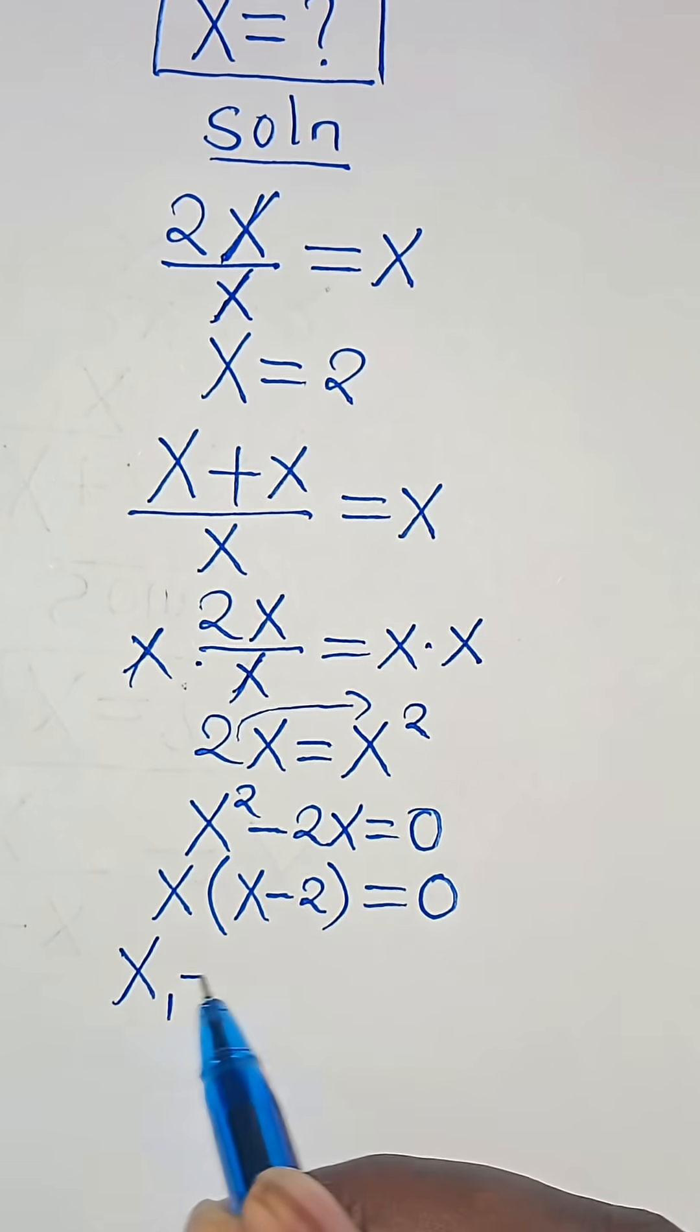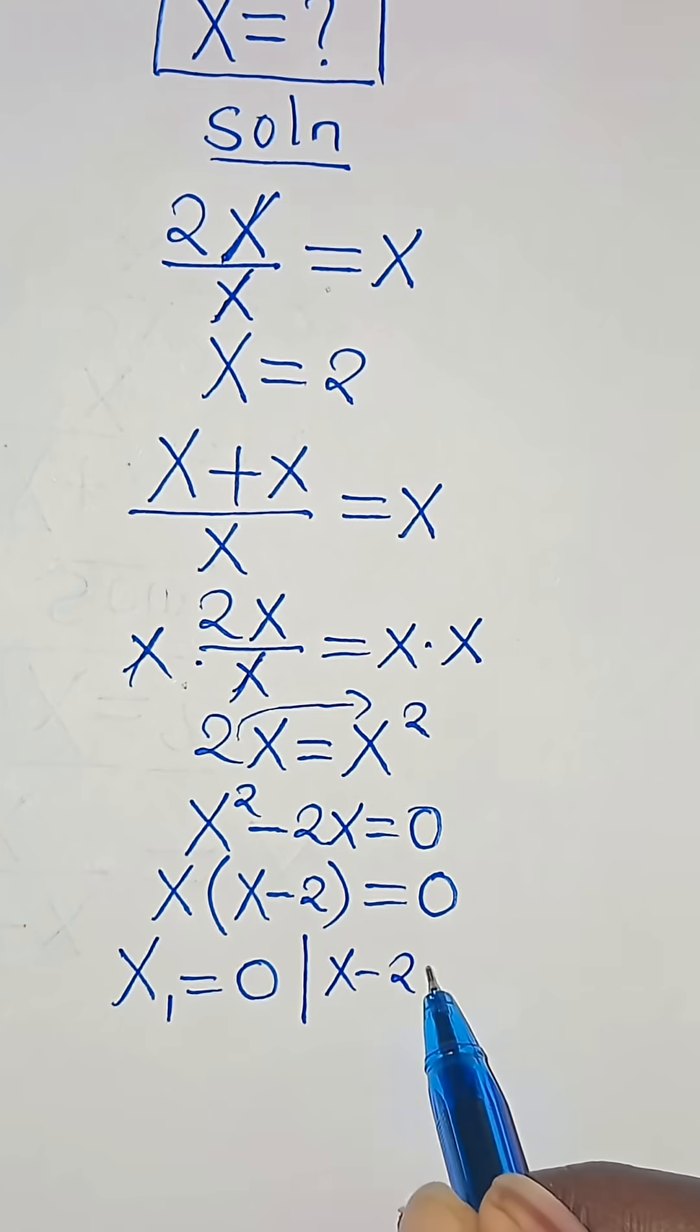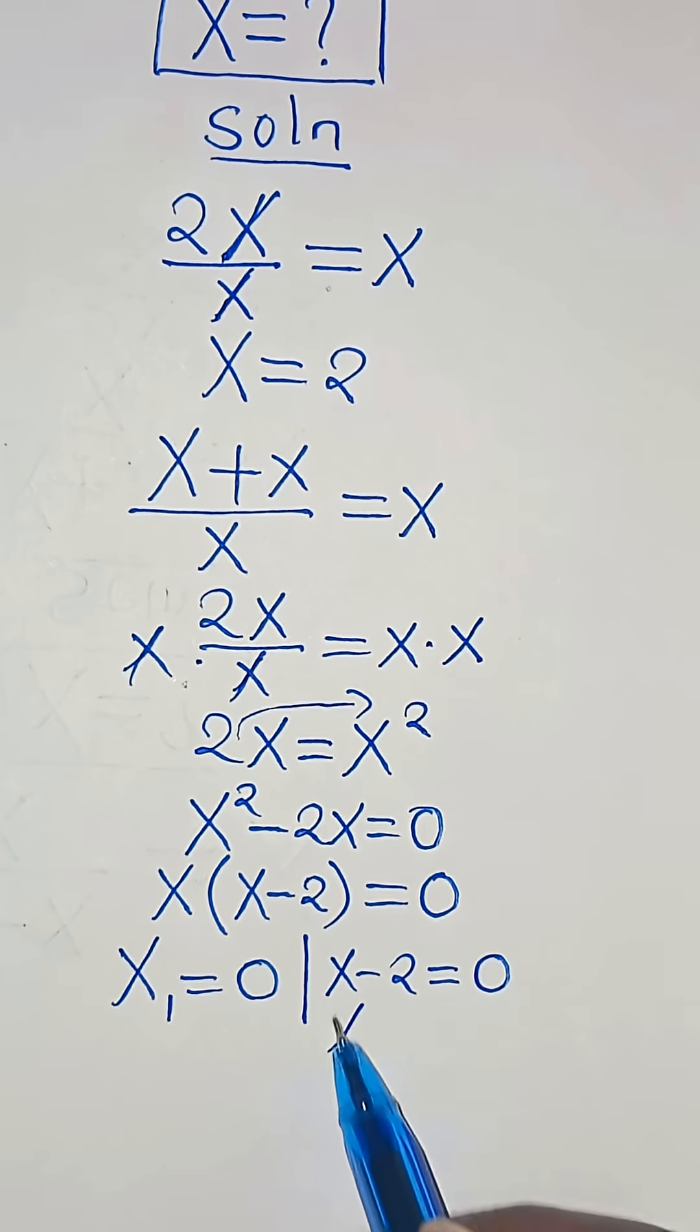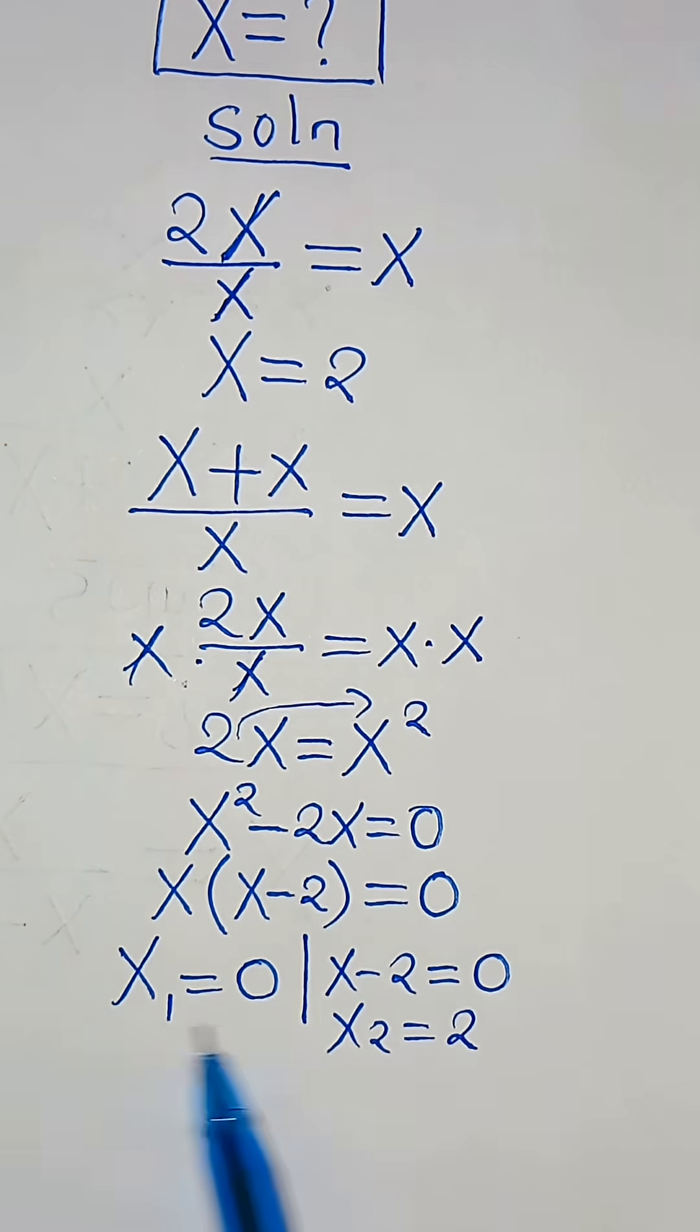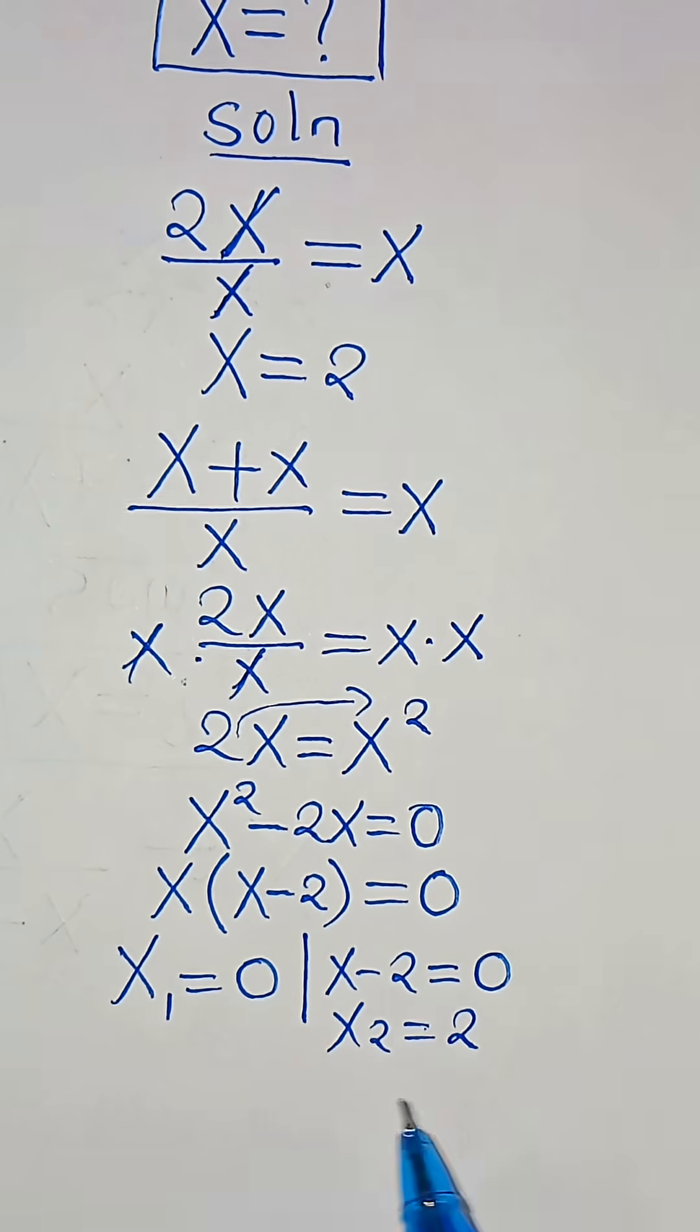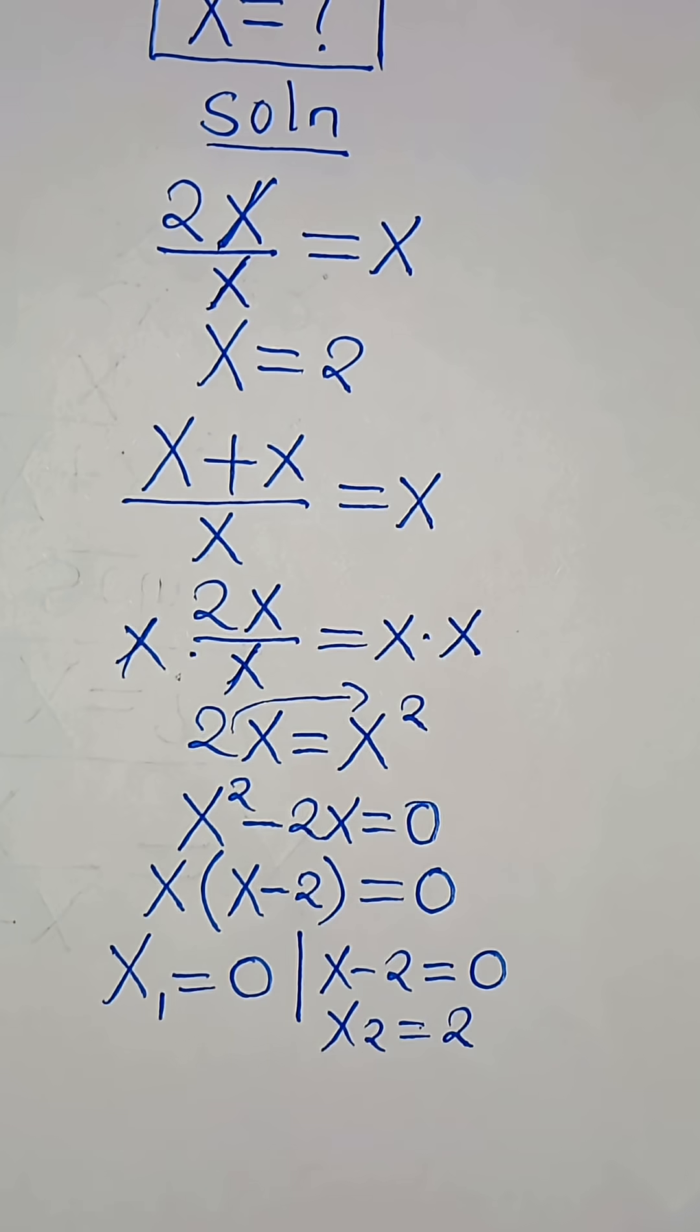x1 is equal to 0, and we have x minus 2, this is equal to 0. So this means that x2 is equal to 2. So we have two values of x: x1 is 0, x2 is 2, and these are the solutions to this small problem.